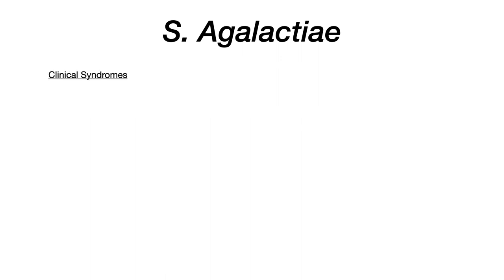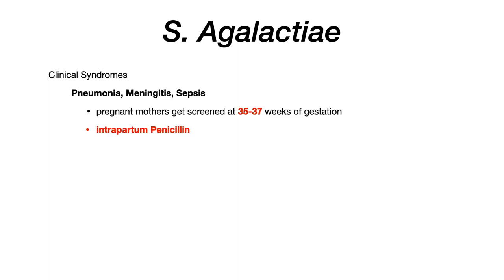What is really high yield is the clinical syndromes that strep agalactiae can cause. The three to memorize are pneumonia, meningitis, and sepsis — specifically all in neonates. So this is neonatal sepsis, neonatal meningitis, et cetera.